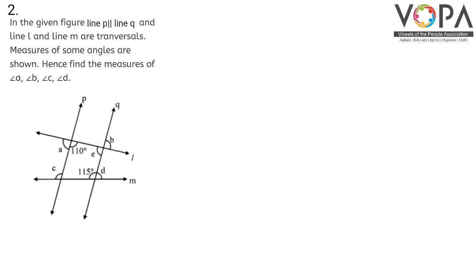In the figure, line P is parallel to line Q, and line L and line M are the transversals. Measures of some angles are shown. Find the measures of angle A, angle B, angle C, and angle D.